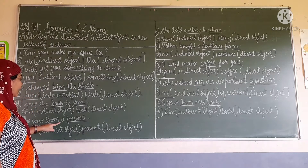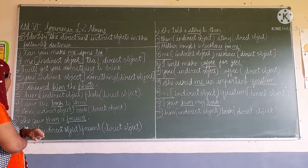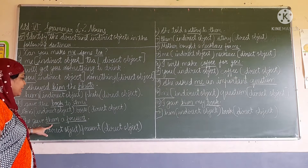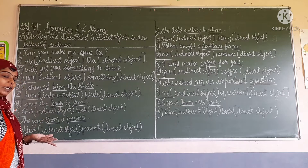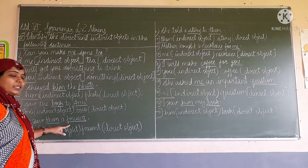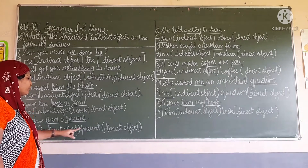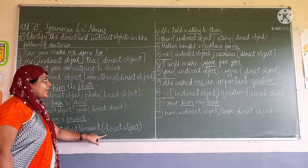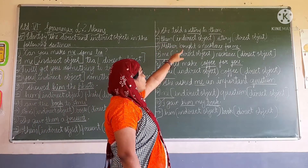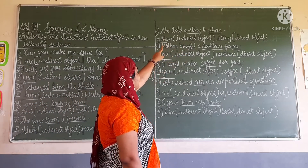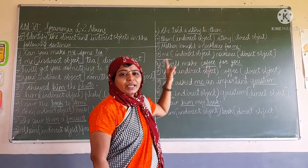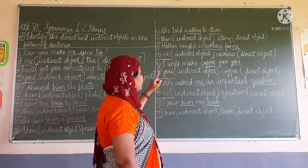Now: she gave them a present. What did she give? Something. So here 'them' is the person, so 'them' is the indirect object and what is the receiver of the action? 'Present' — and that is the direct object. Next: she told a strong story to them. Here 'them' is the indirect object and 'story' is the direct object.